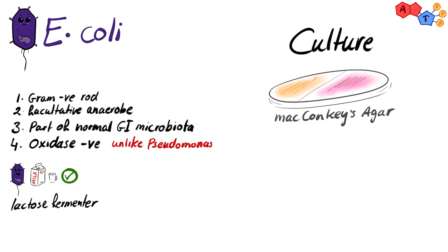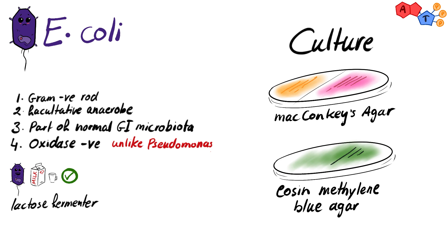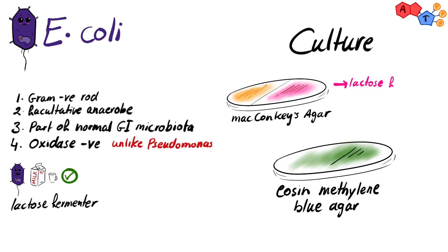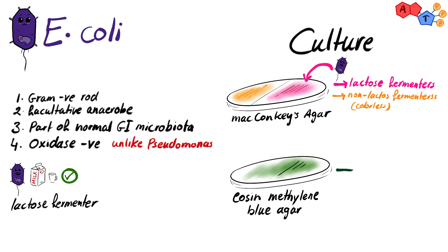To culture E. coli, we can use McConkey's agar and eosin-methylene blue agar. On McConkey's agar, lactose fermenters will grow in pink colonies, where lactose non-fermenters will grow in colorless colonies, so E. coli will grow in pink colonies. On eosin-methylene blue agar, it produces a metallic green sheen.